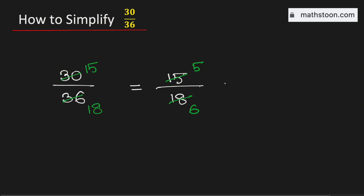Therefore it is now equal to 5 over 6, and this fraction cannot be simplified further because the only common divisor of 5 and 6 is 1. Therefore the fraction 30 over 36 simplified is equal to 5 over 6. And this is our final answer.